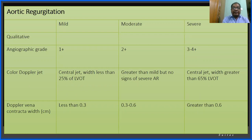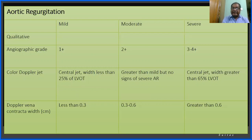Aortic regurgitation is categorized as mild, moderate, or severe by qualitative and quantitative assessment. Qualitatively, angiographic grading is 1+ to 4+. Color Doppler jet: if it affects less than 25% of the LVOT it is mild; 25–65% of the LVOT is moderate; greater than 65% of the LVOT is severe. Doppler vena contracta width: less than 0.3 cm is mild, 0.3–0.6 cm is moderate, and greater than 0.6 cm is severe.